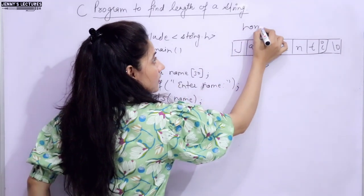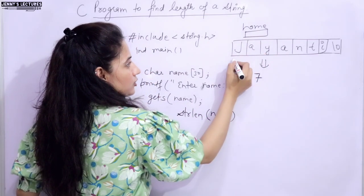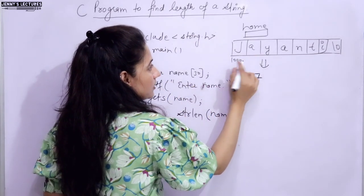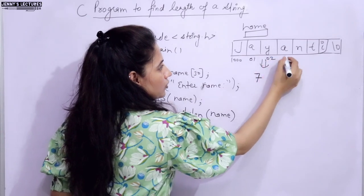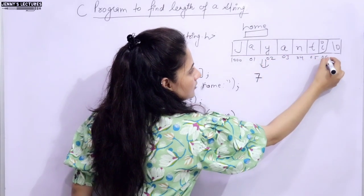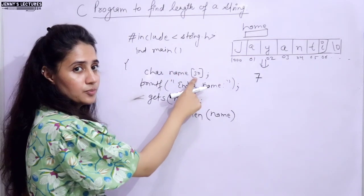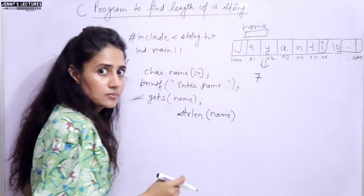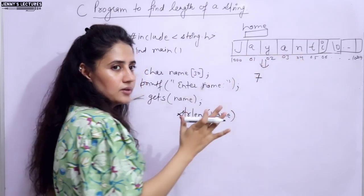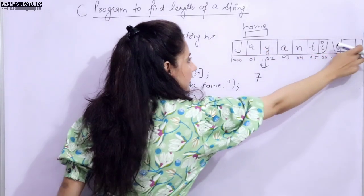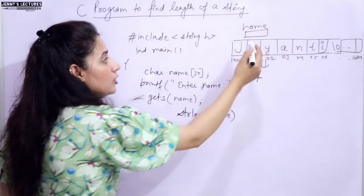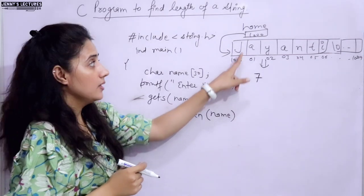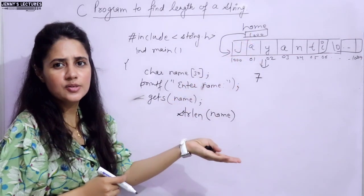Name contains the base address - suppose address 1000 - and we have space for 30 characters. In name we have the base address, or the address of the first byte, which is 1000. So obviously name is acting as a pointer. That is why we pass name to strlen - strlen accepts a pointer to the string.